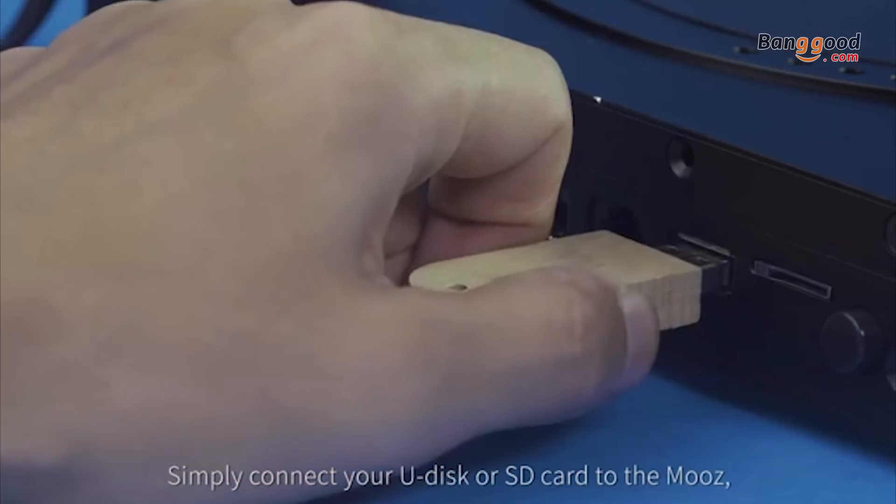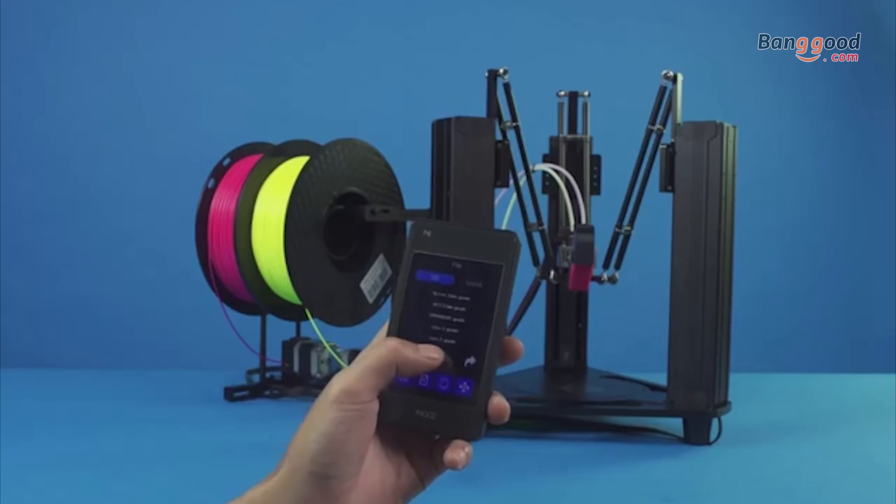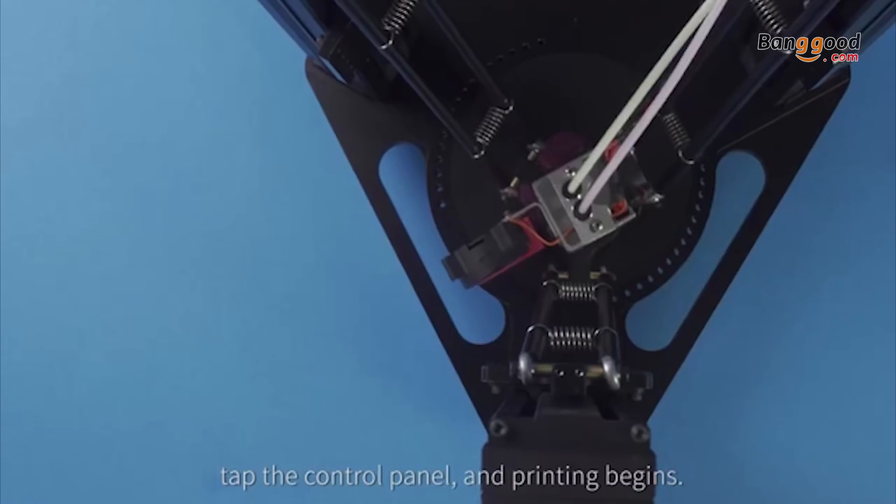Simply connect your U-disc or SD card to the Moose, tap the control panel, and printing begins.